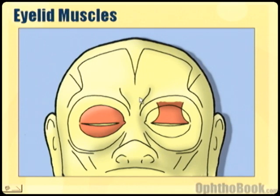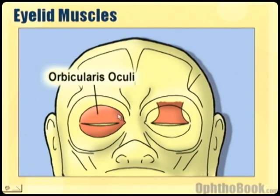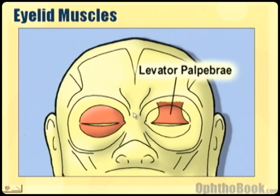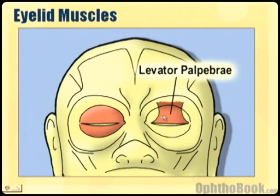The two main eyelid muscles you need to know about are the orbicularis, which is formed in a circular pattern around the eyes and actually closes the eye — it's controlled by cranial nerve seven. So if you have a Bell's palsy where you lose the facial muscles on one side, these patients have a hard time closing their eye and that can create a lot of exposure problems. The other muscle is the levator palpebrae, which is controlled by cranial nerve three. This muscle is a ribbon that attaches to the top of the tarsal plate and pulls the eye open. If you have a cranial nerve three palsy, these people have a ptotic eyelid — a very low eye.